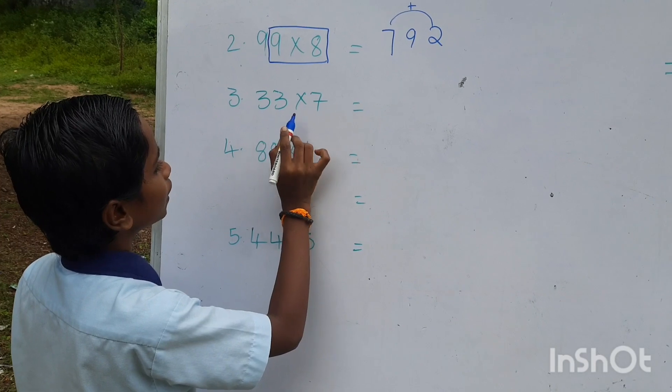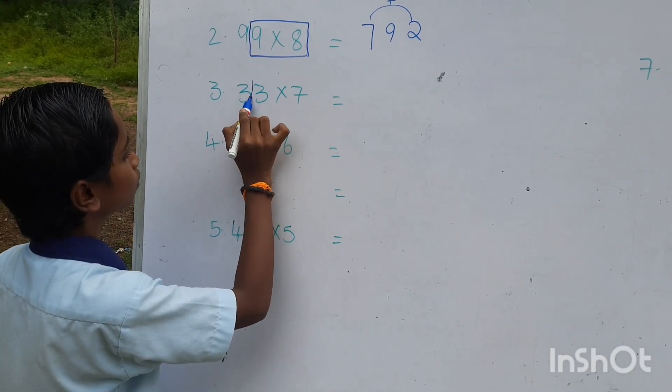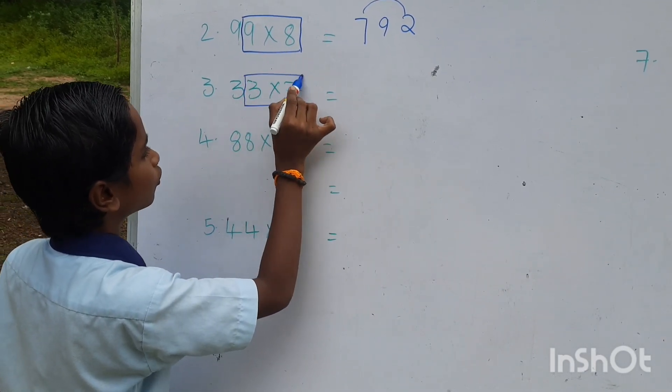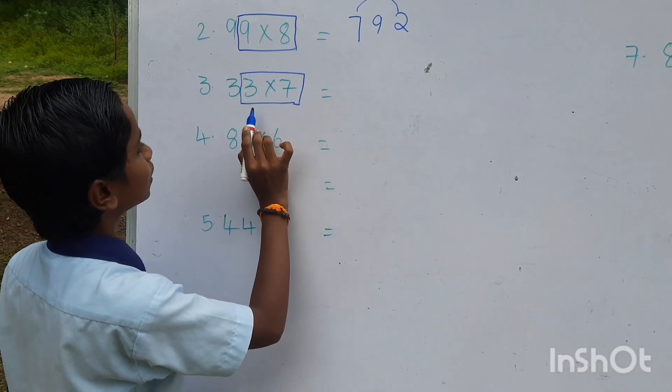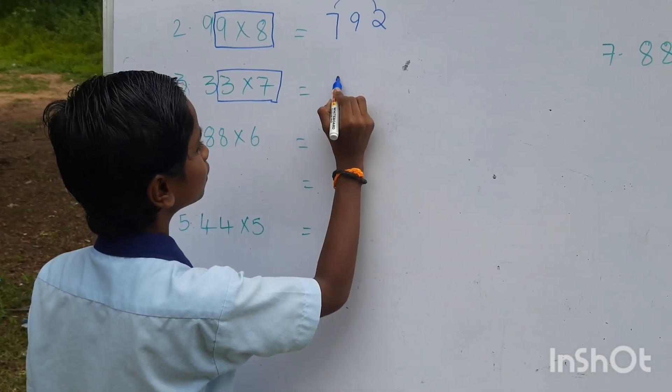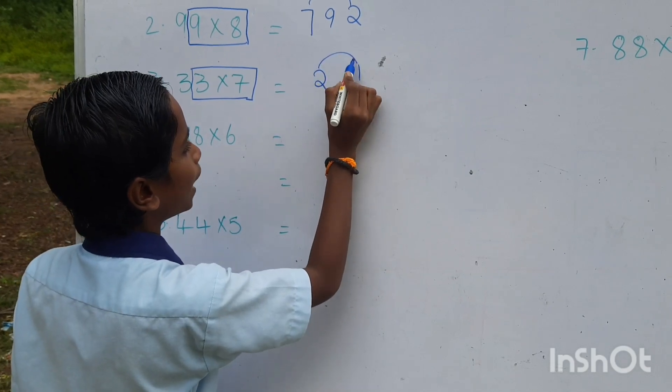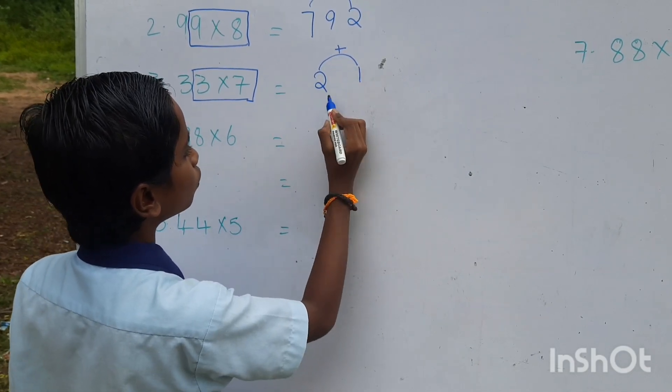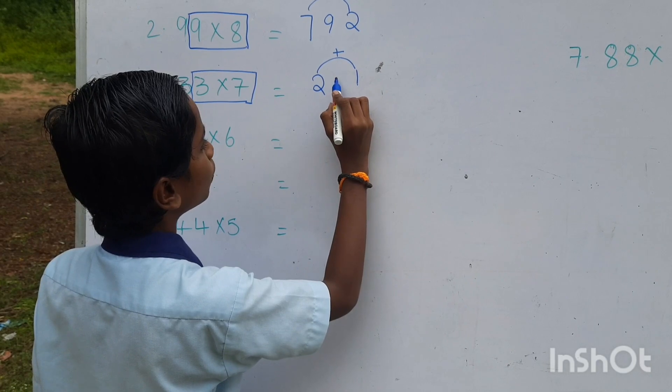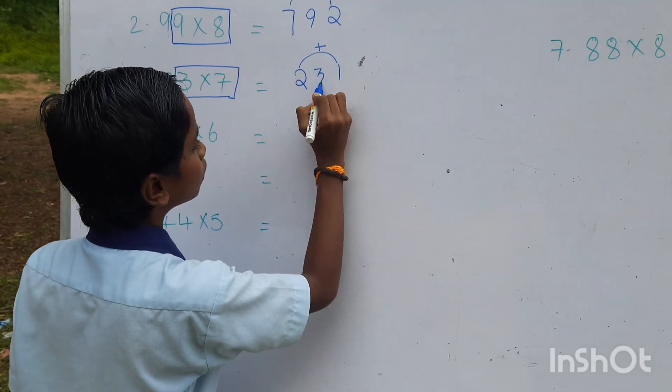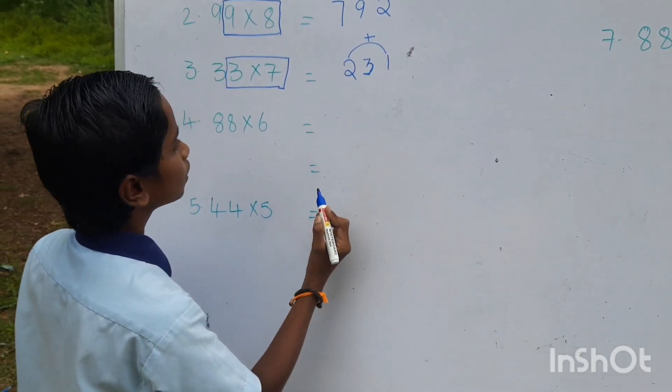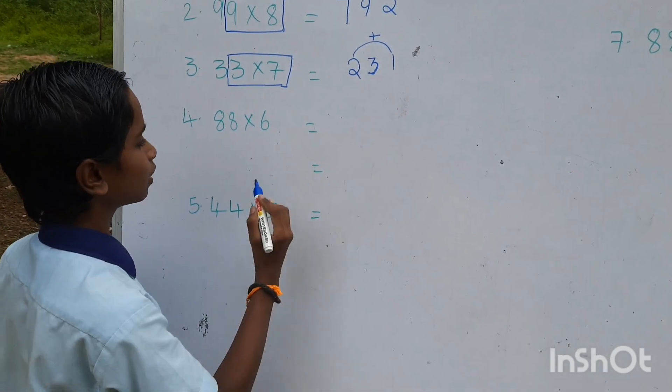Third one, 33 into 7. We want to multiply these both numbers. 3 into 7, 3 7s are 21. We want to add 2 and 1. 2 plus 1 equals to 3. 33 7s are 231.